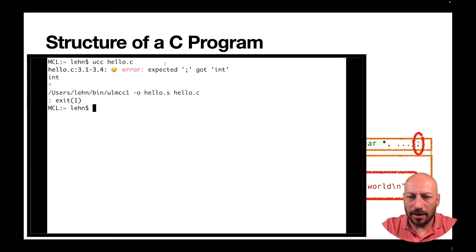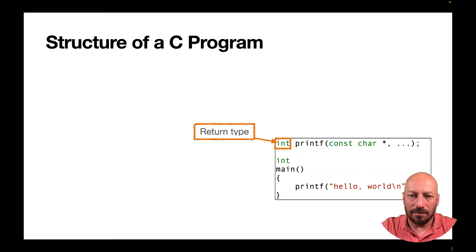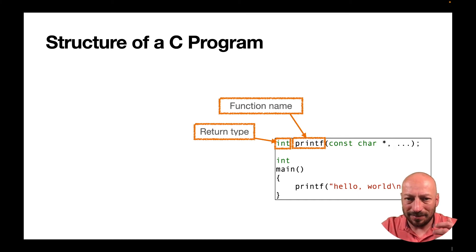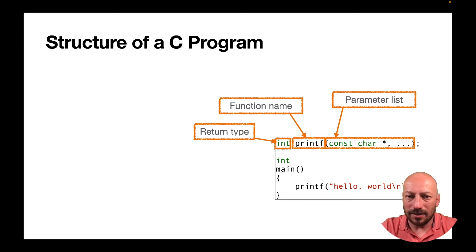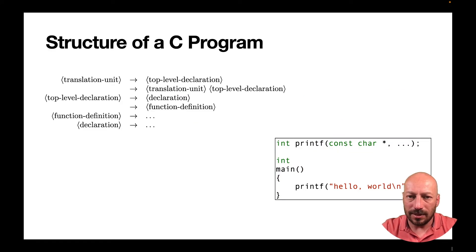In the language it's required that for a function declaration or definition, you first have some return type followed by an identifier for the function name, followed by a description of the parameter list. Then you either have a semicolon — making it a function declaration — or a block of statements. The formal definition of how things have to be written, expressed with so-called production rules, I will come back to later when we talk about expressions and operator precedence.